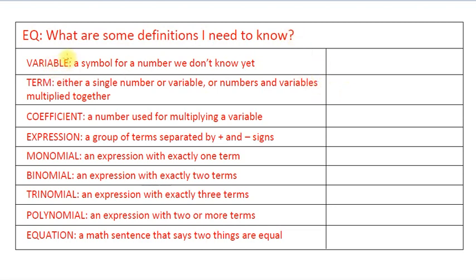The first definition is the word variable. You've seen the word used a lot. Variable is a symbol for a number we don't know yet. So we use letters typically to represent variables or numbers that can have multiple values or numbers that we don't know yet. Here's an example: if I wrote y equals 3x minus 2, you'd see that the variables are y and x. 3 is not a variable, it's a known value or a constant, and negative 2 is also a known value.